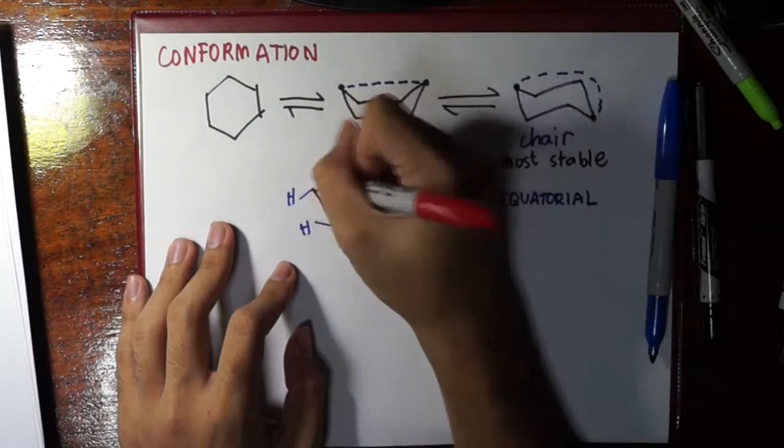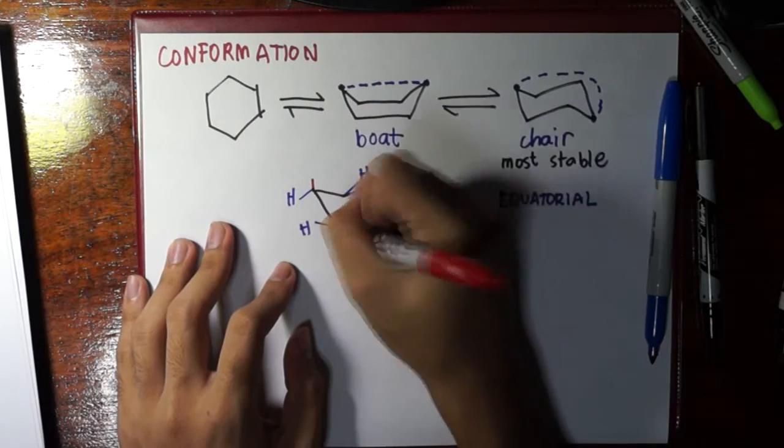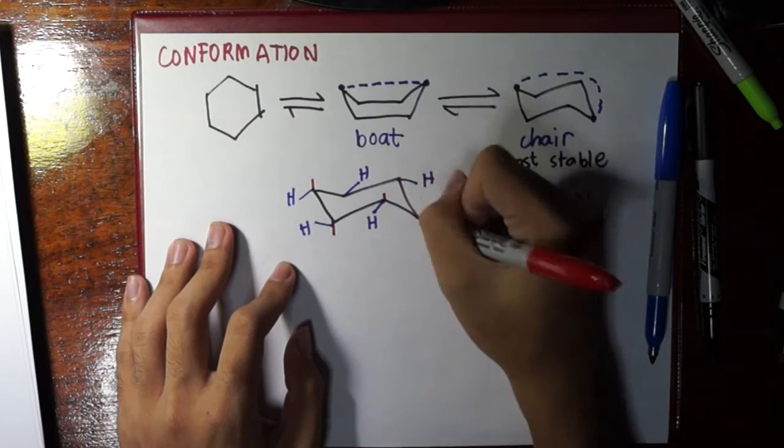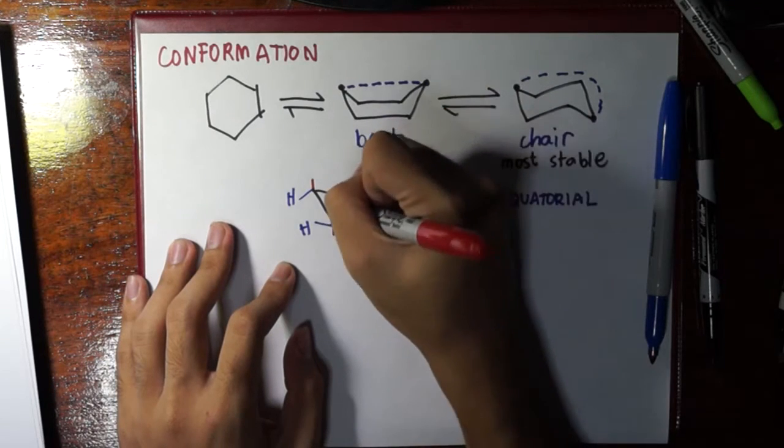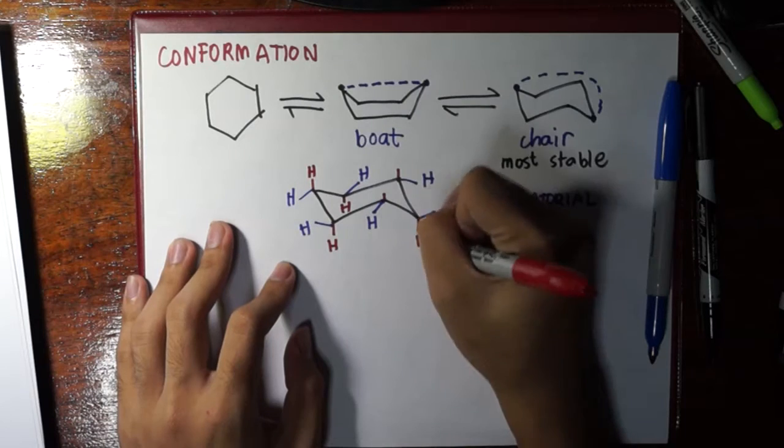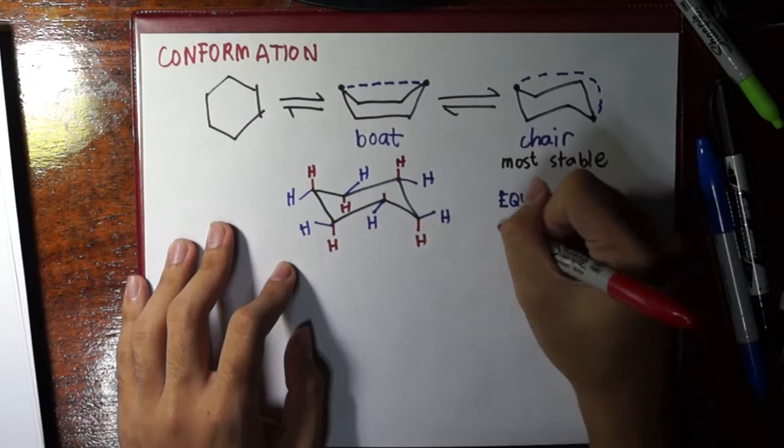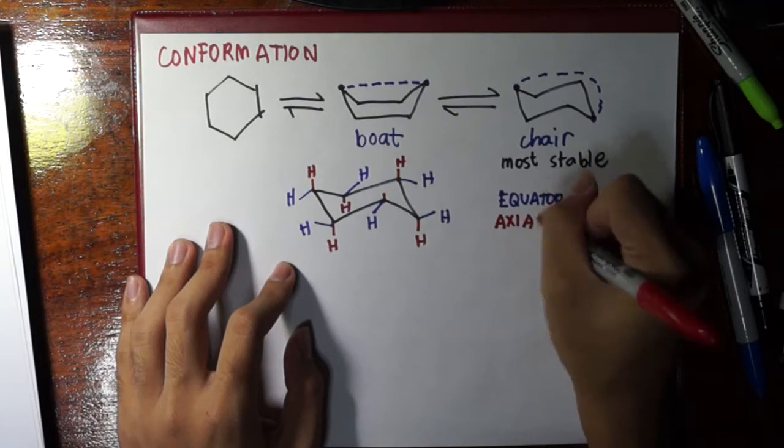The bonds in blue are called the equatorial bonds. And I'll draw in red the other type of bond. So let's again fill this up with H.